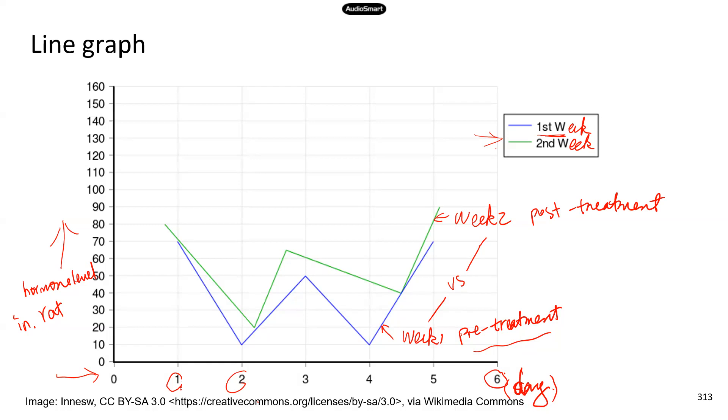All right, so the green line is higher than the blue line. So we can at least tell from the line graph, just at first glance, that the hormone levels are higher in week two than week one. Now, whether the difference is meaningful, we'll have to do some statistical analysis. But right now the numbers are higher for week two than week one.